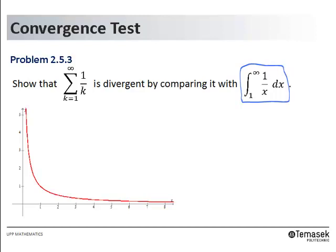Let's sketch the function 1 over x as shown here. We shall sketch rectangular strips in this manner. The first rectangular strip has an area of 1, the second rectangular strip has an area of one half, and the third rectangular strip has an area of one third.